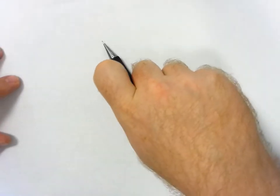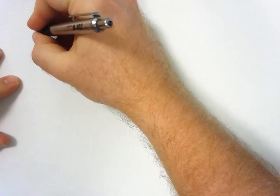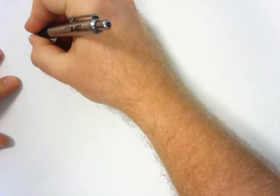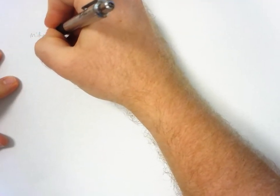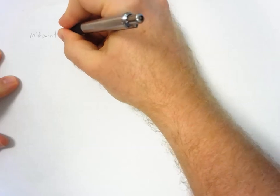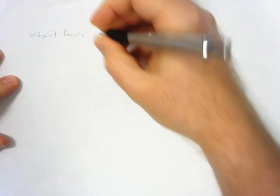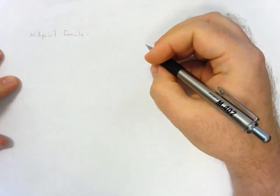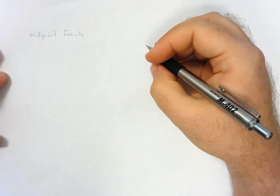This video is going to go over the midpoint formula and how we use it to calculate elasticity in economics. Let's start by writing the midpoint formula — the trick for using and finding it is essentially to take the average of two points on the curve.